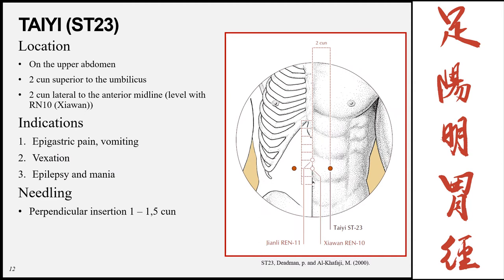Taiyi, Stomach 23, is on the upper abdomen, 2 cun superior to the umbilicus and 2 cun lateral to the anterior midline. Indications include epigastric pain, vomiting, vexation, epilepsy, and mania. Insertion is perpendicular, 1 to 1.5 cun.